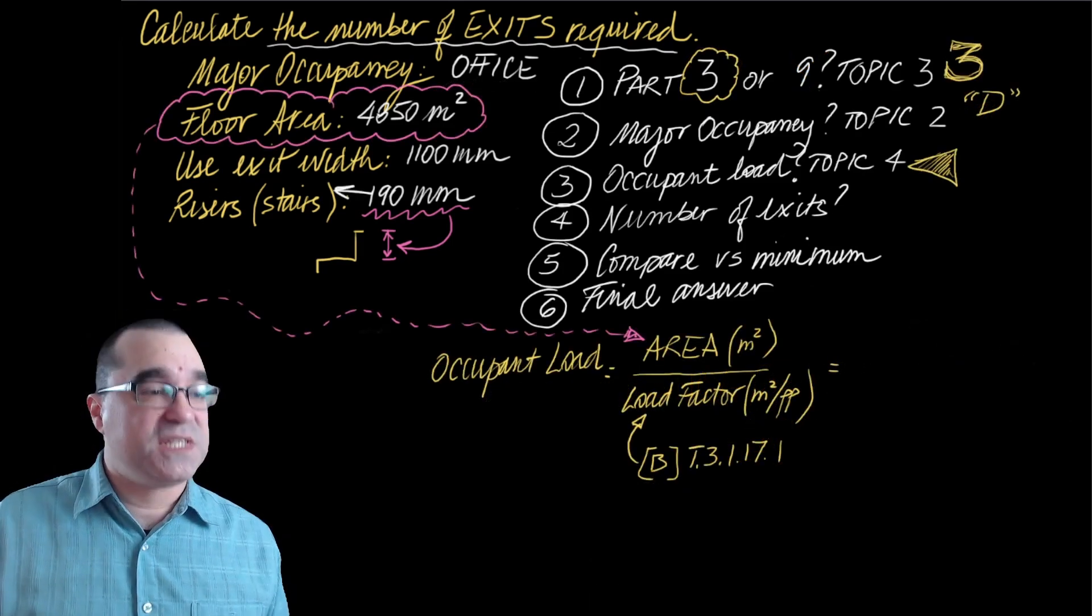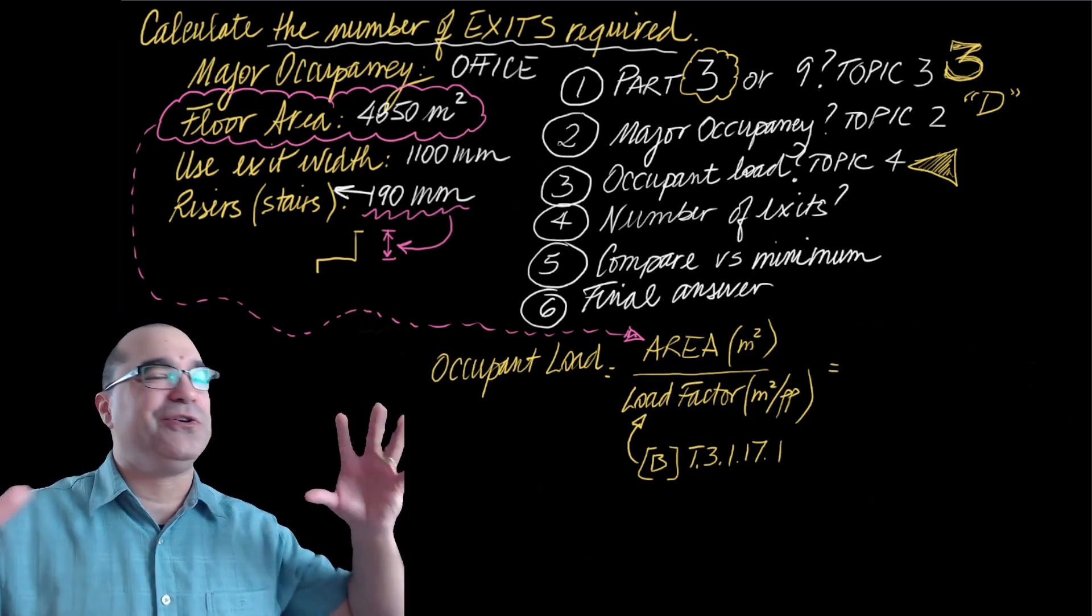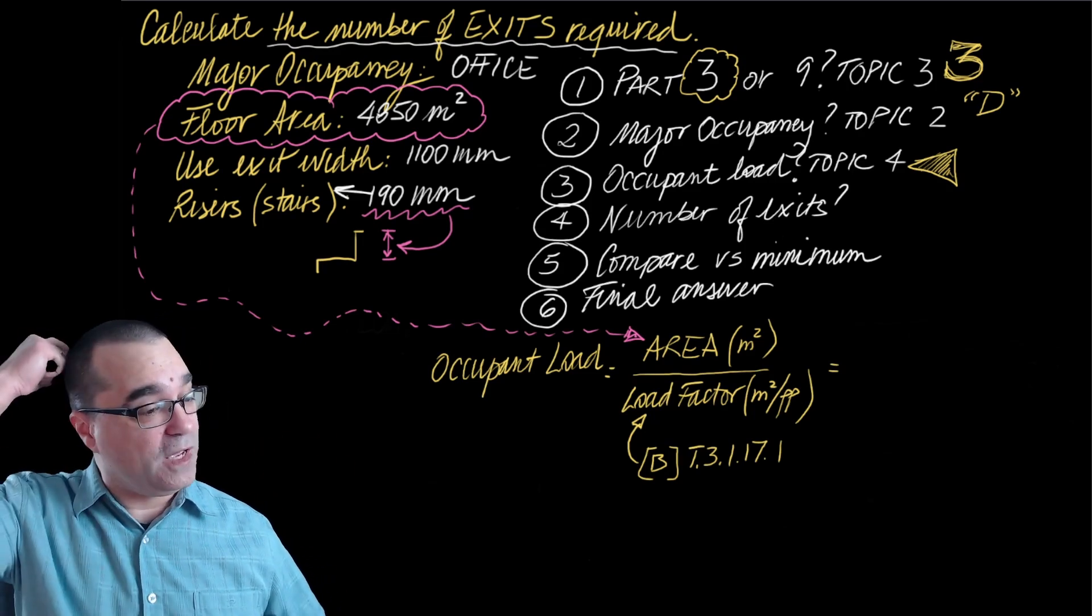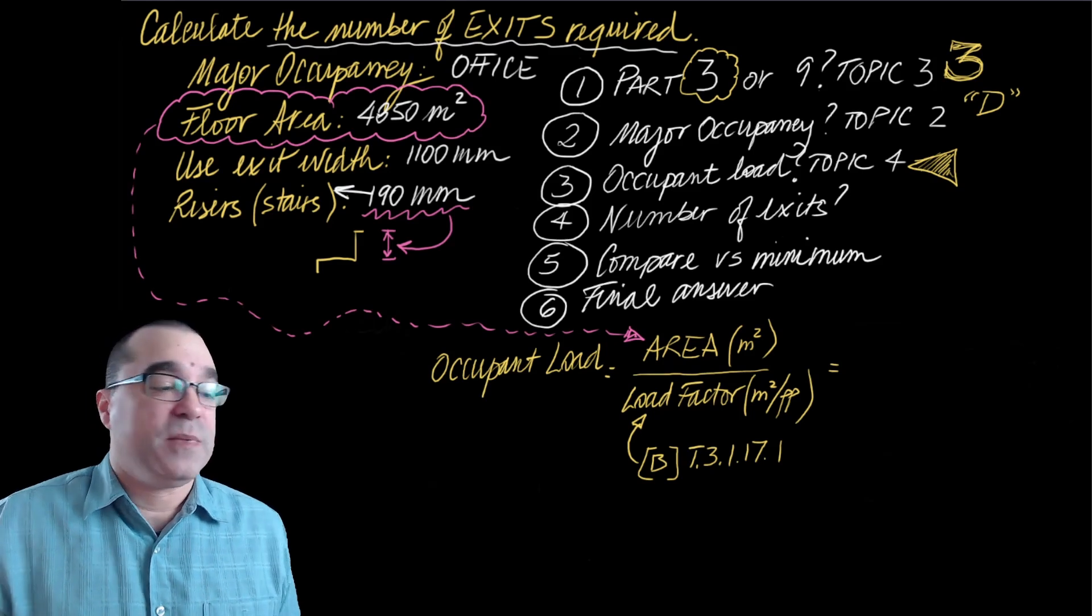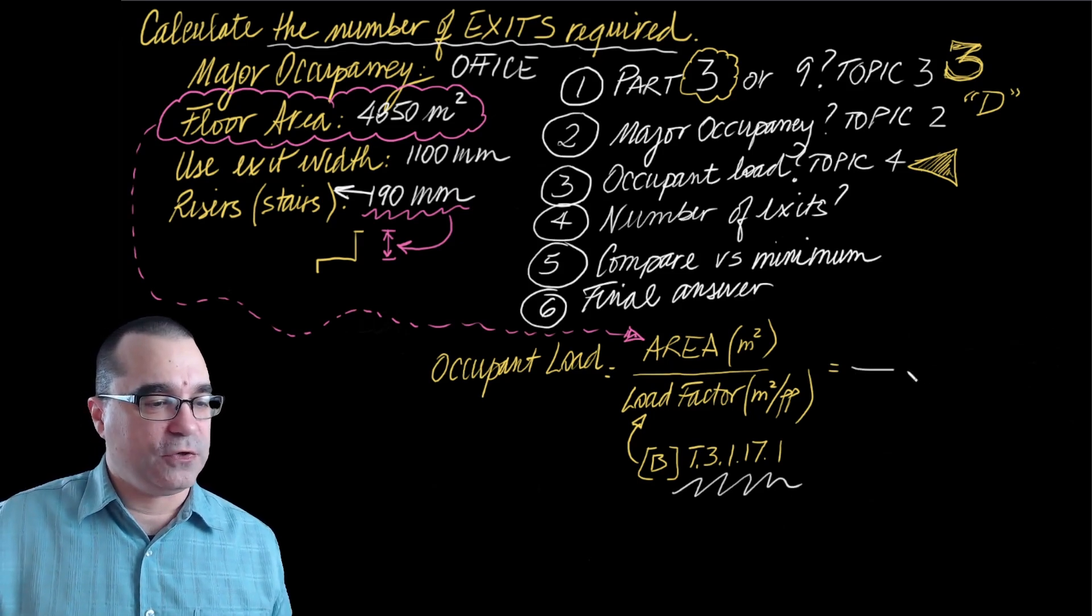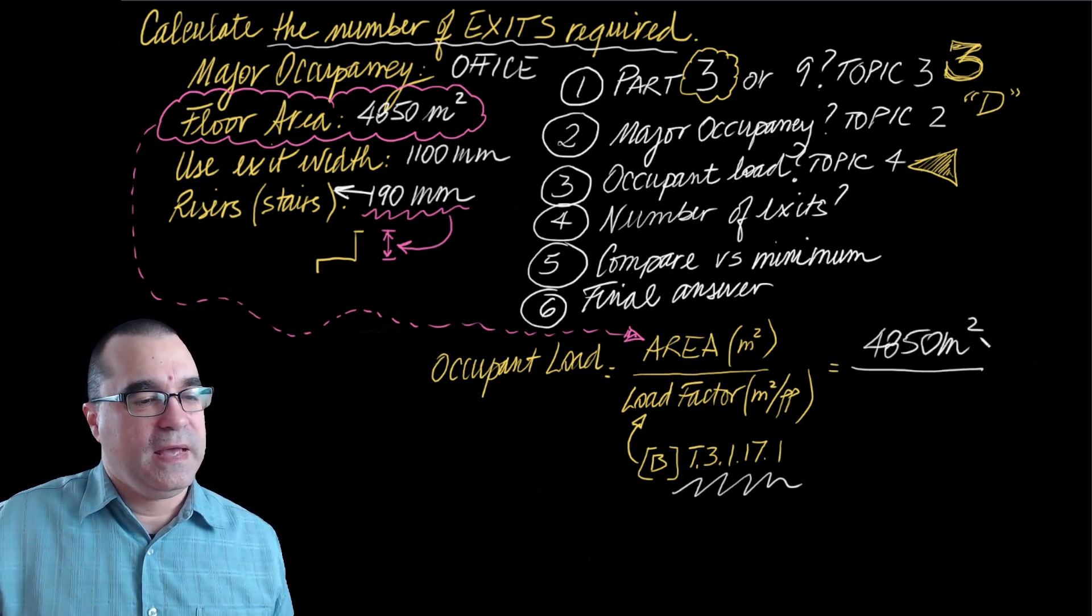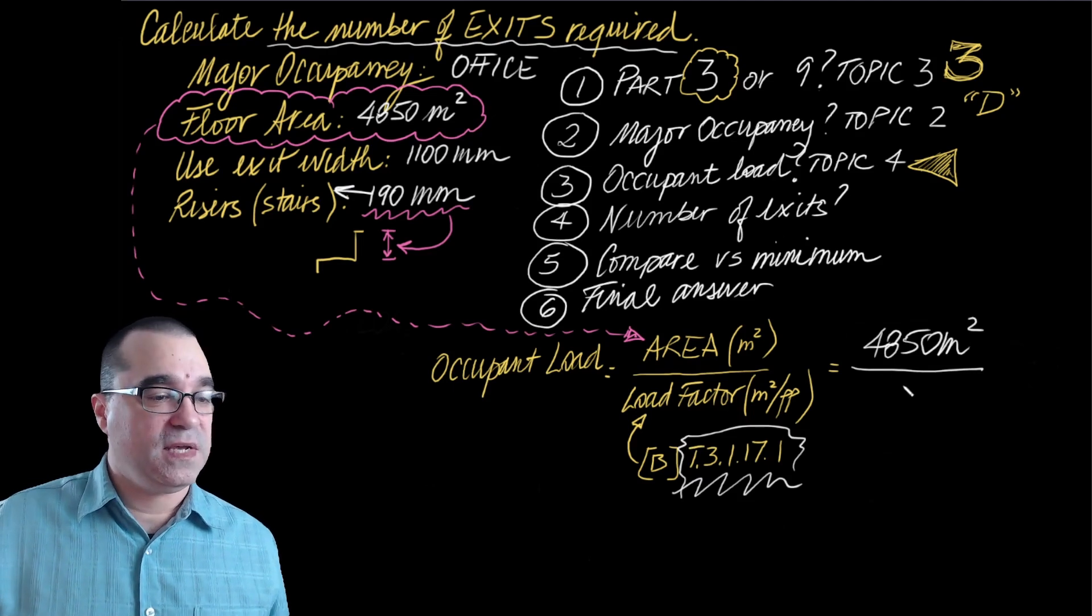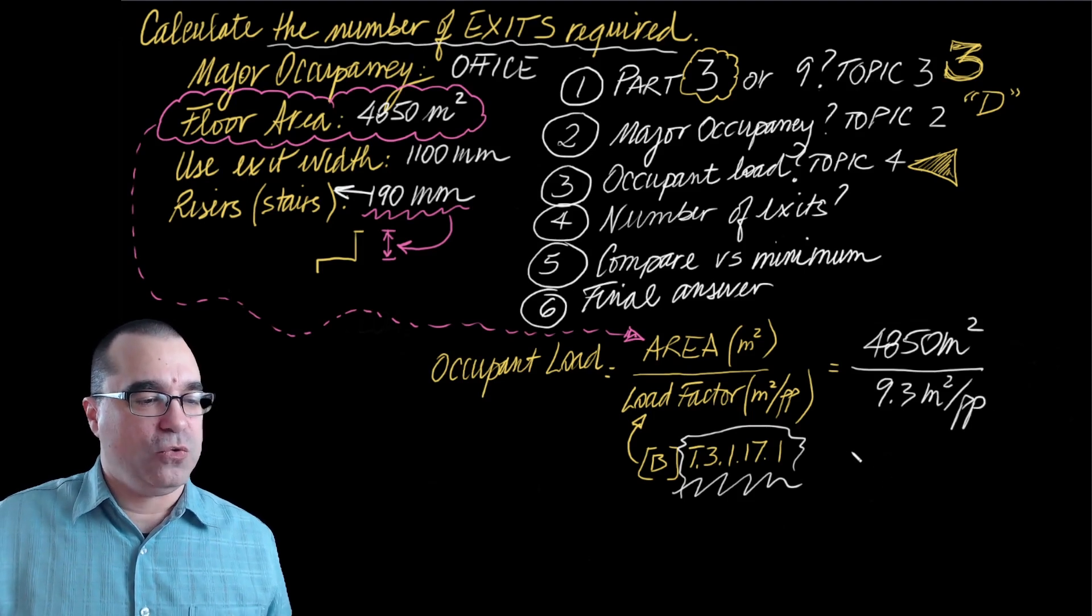Let's move on to step number three. Under step number three, we have to use what we learned in topic four to figure out the occupant load. Occupant load is fancy building code speak for how many people are using that space. So it's based on the floor area, and it's the ratio between the floor area and the occupant load factor that's obtained from table 3.1.17.1. So I'm going to figure that out. The area is 4,850 meters squared. And from table 3.1.17.1, for a D major occupancy, office space, the occupant load factor is 9.3 meters squared per person.